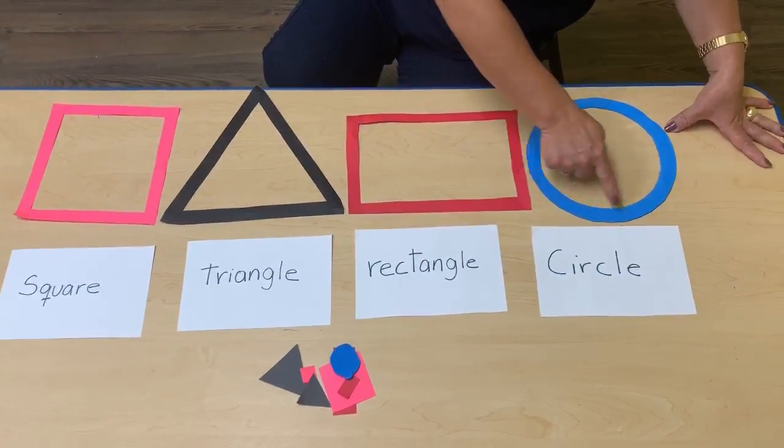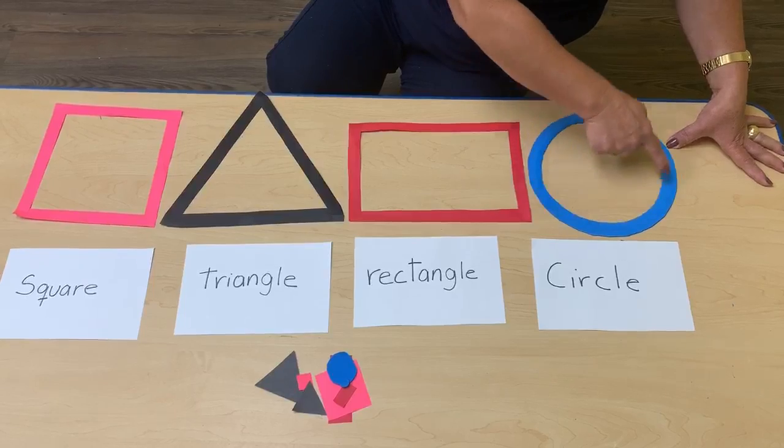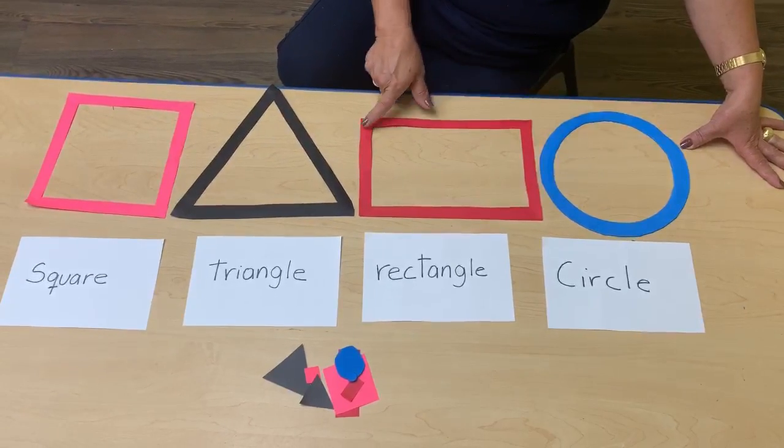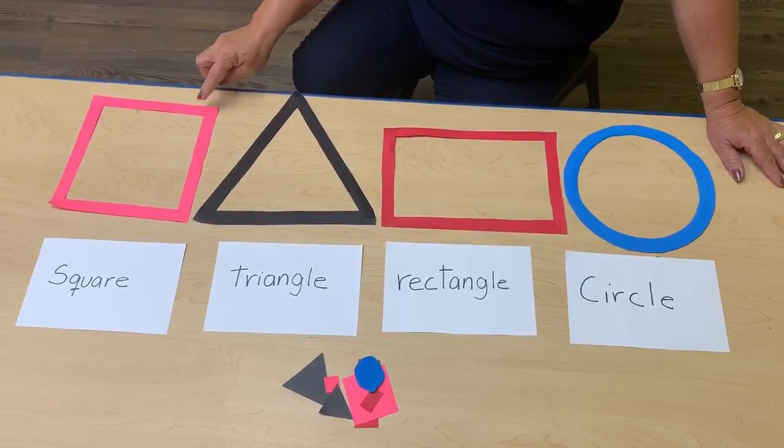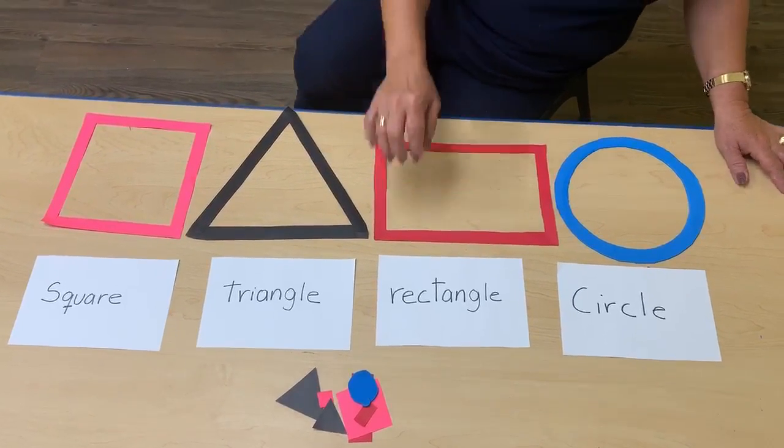This is circle. Around, around, around. Rectangle, triangle, square. Let me find it.